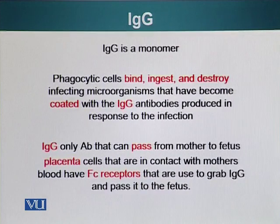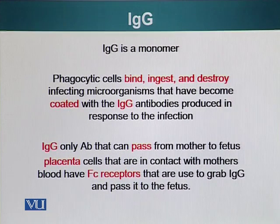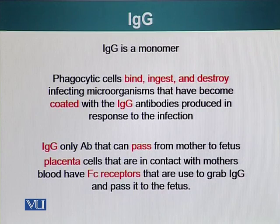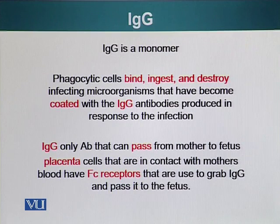The next class is IgG. IgG is a monomer. Phagocytic cells have receptors that can bind the FC region of these antibodies — the very tip of the tail of an antibody. These pathogens can bind the FC region using their special receptors, which causes activation of these phagocytic cells. The mechanism by which they engulf the pathogen is receptor-mediated endocytosis. Binding of the receptor to the FC region of IgG causes activation of certain proteins that cause the engulfing of that pathogen.